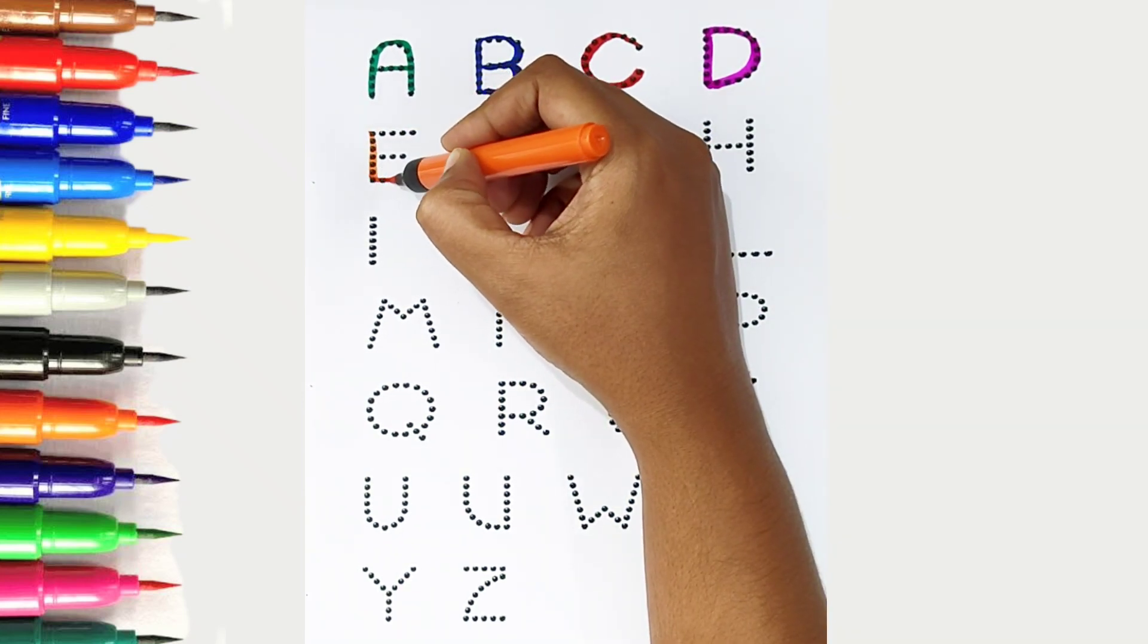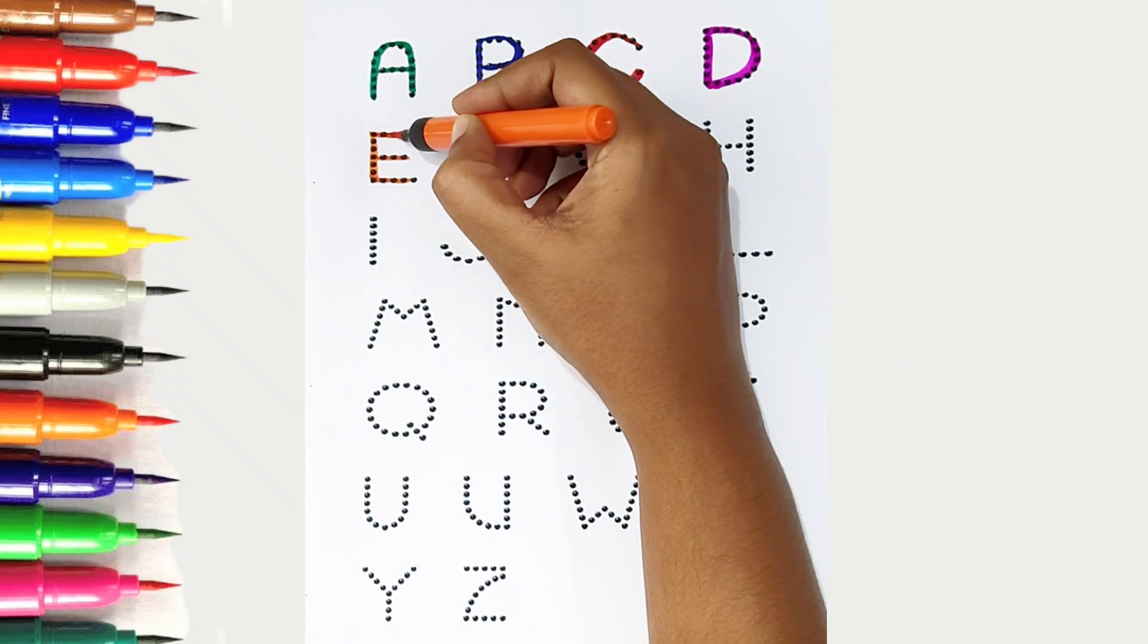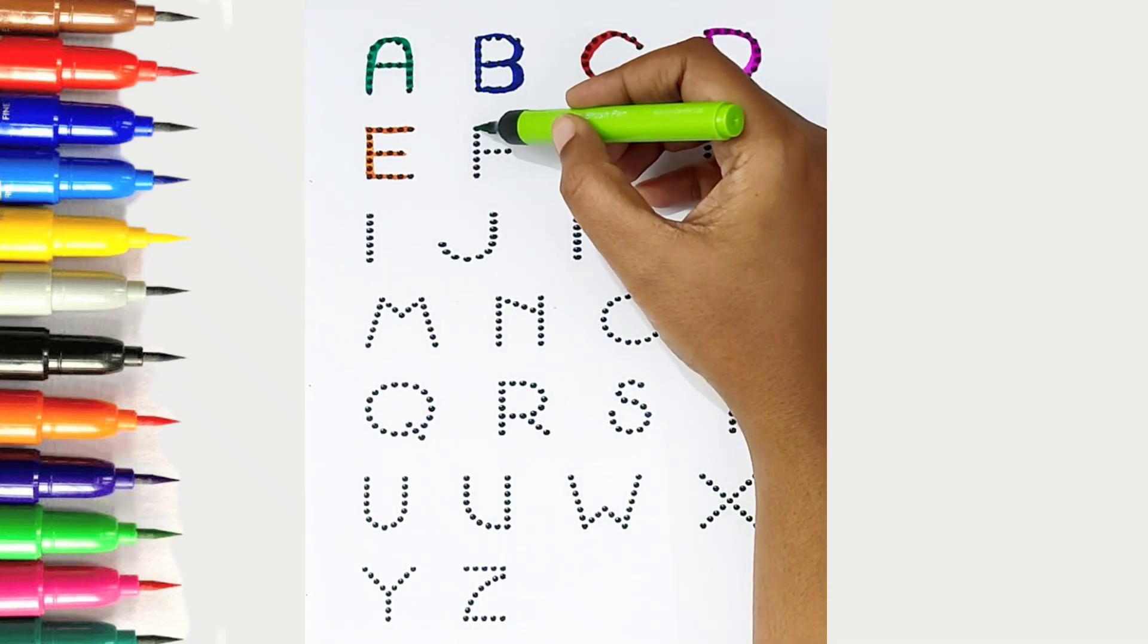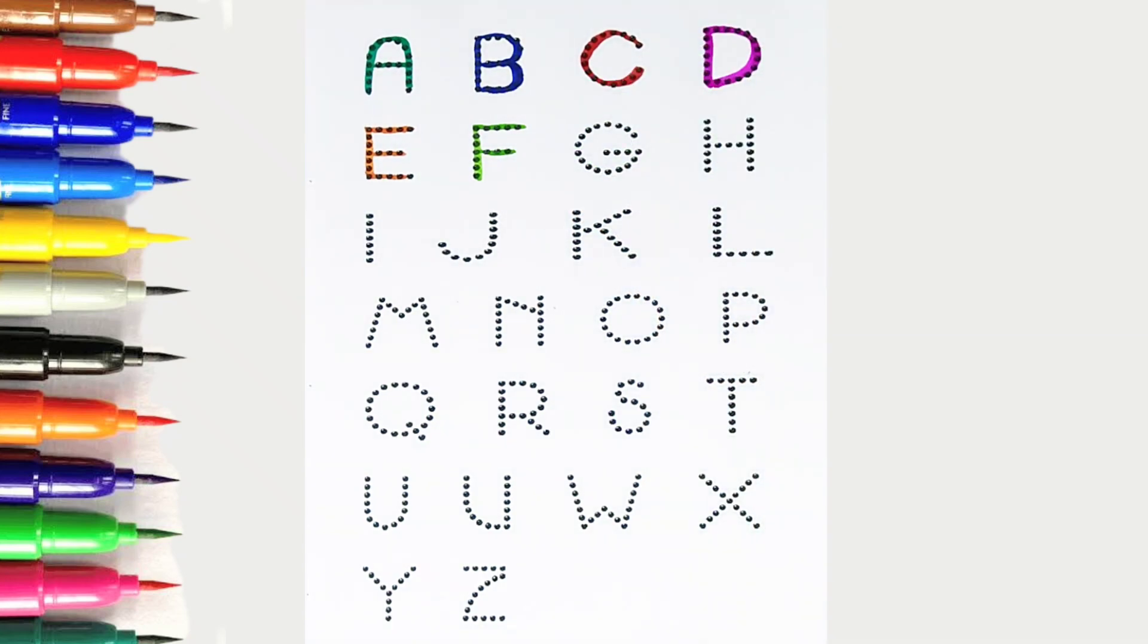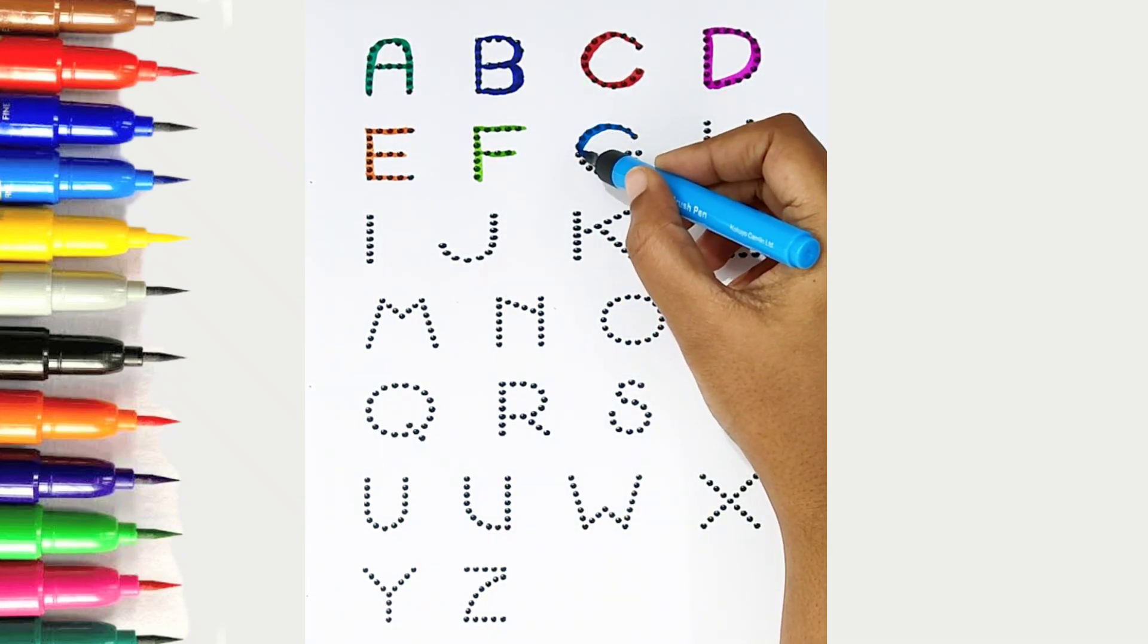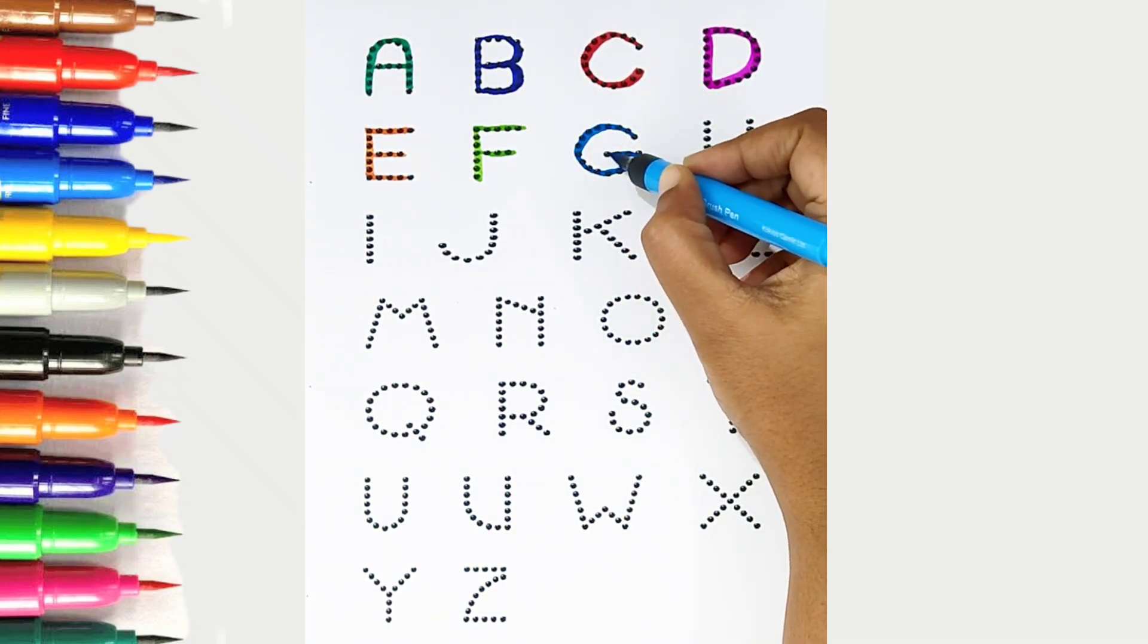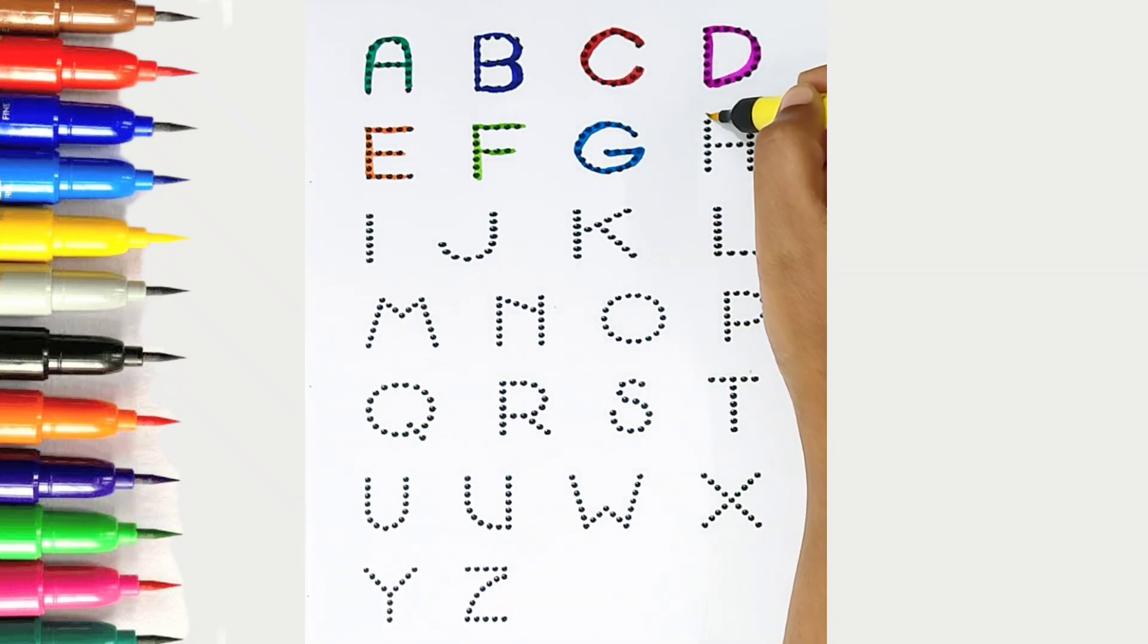E. Orange color, E is for elephant. F. Light green color, F is for frog. G. Light blue color, G is for giraffe. H. Yellow color, H is for hat.